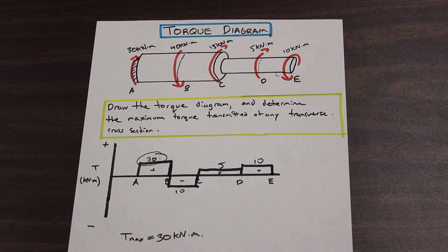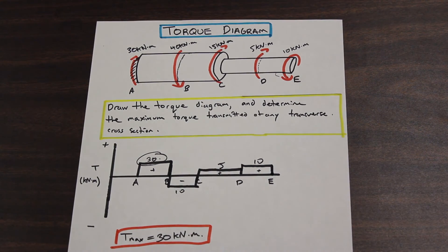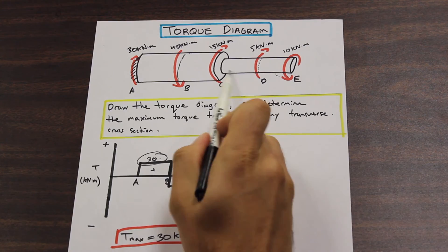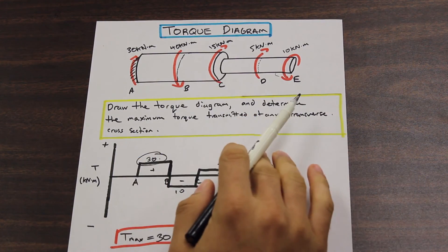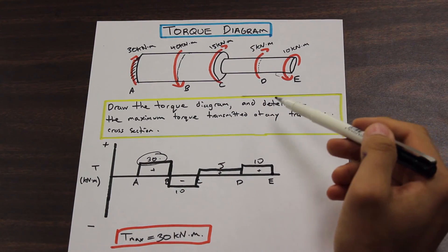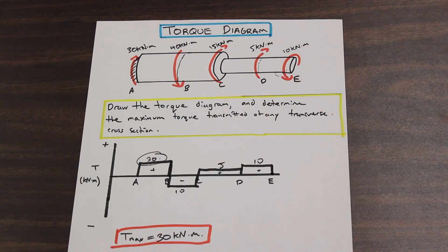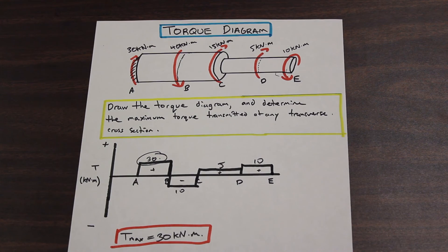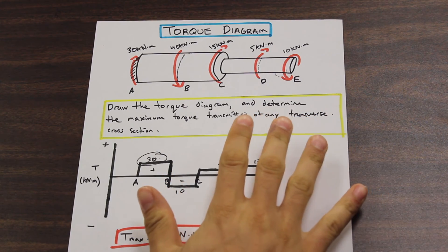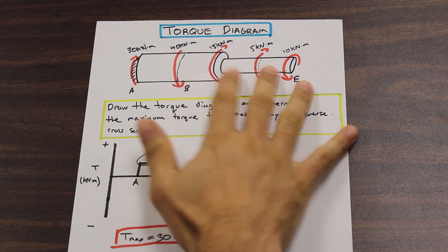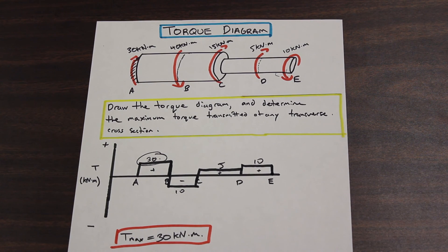One more thing to point out: this shaft has two different diameters — A to C is different than C to E. In this particular question that did not come into play at all. In later questions where you're asked to find shear stress, you'll need to use the diameter, but here the two diameters were just put in to throw you off. Differences in diameter don't affect the external or internal torques.